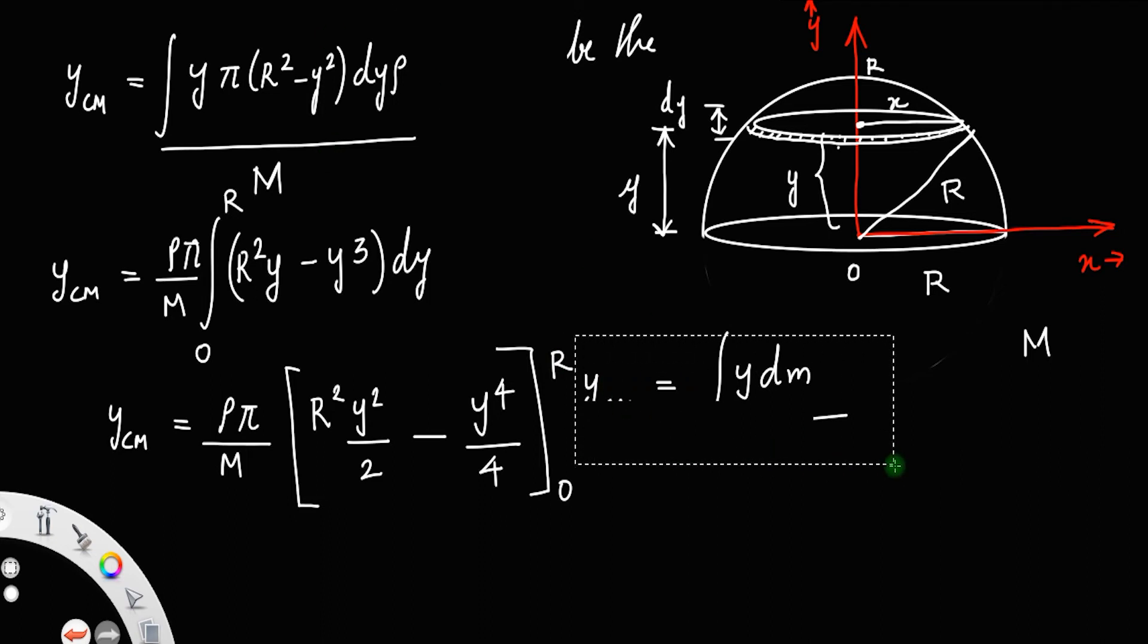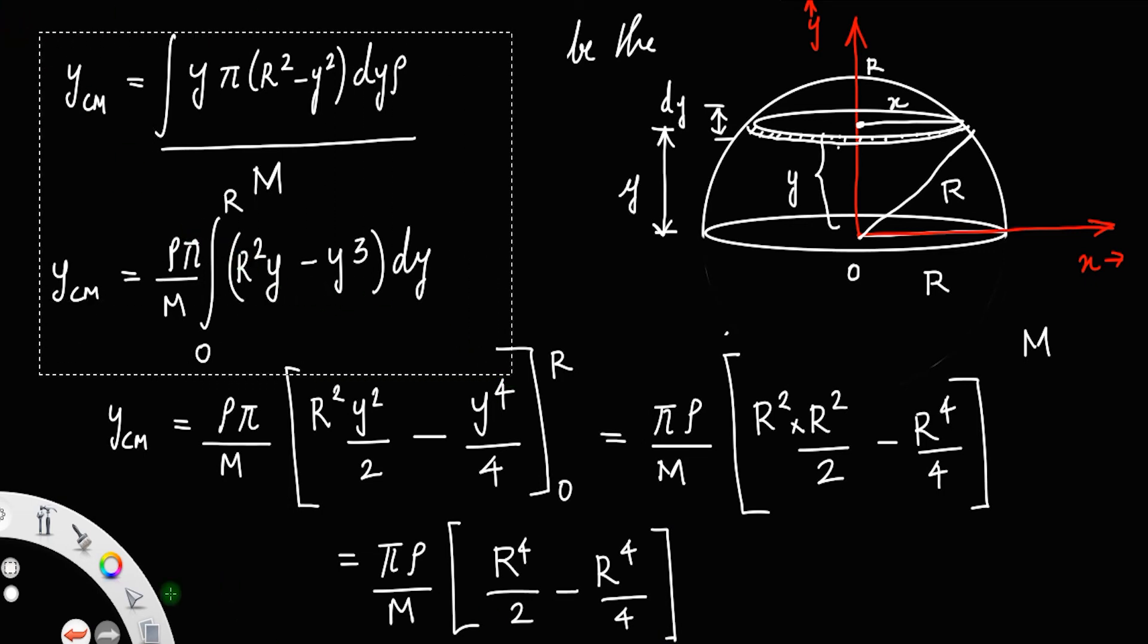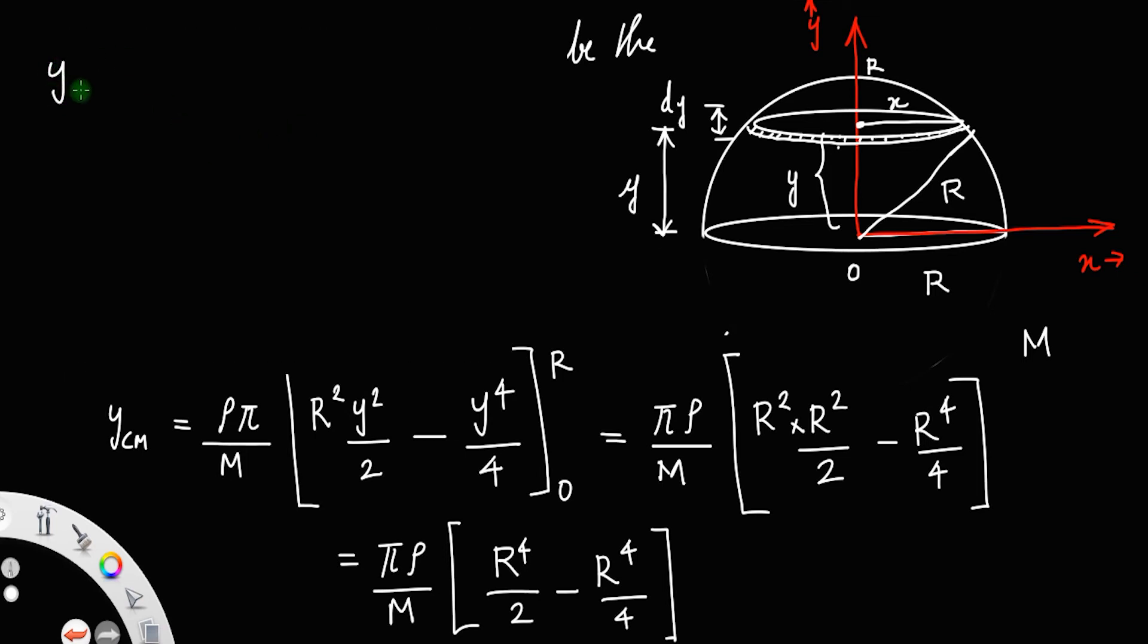That is equal to pi rho divided by M times the upper limit, r squared times r squared by 2 minus r raised to 4 divided by 4. This will be pi rho divided by M into r raised to 4 by 4.